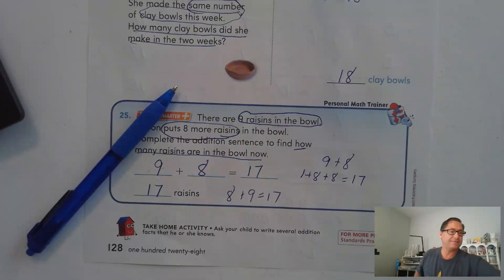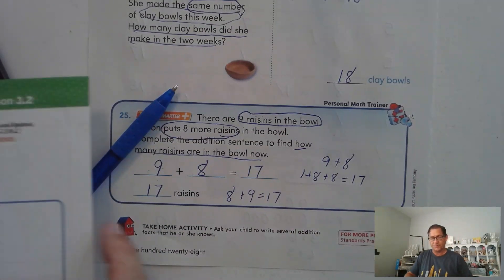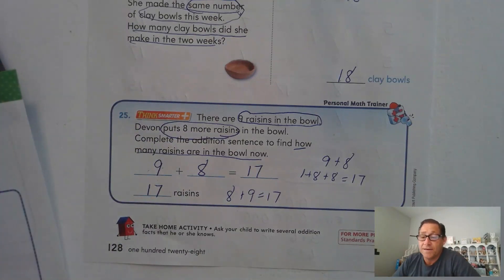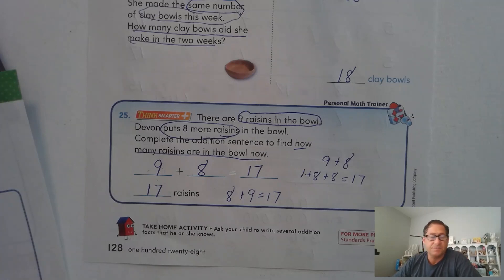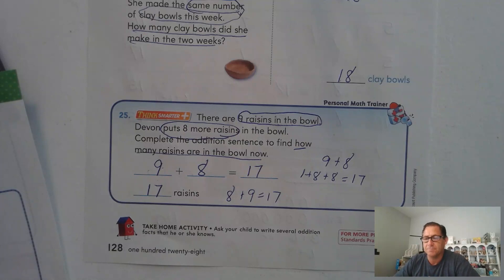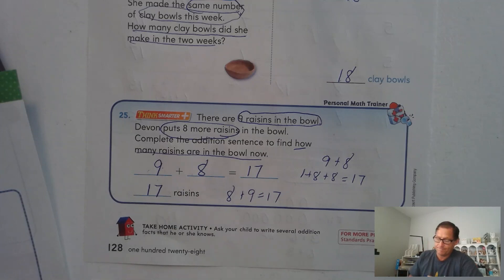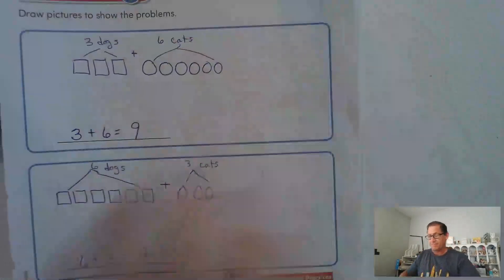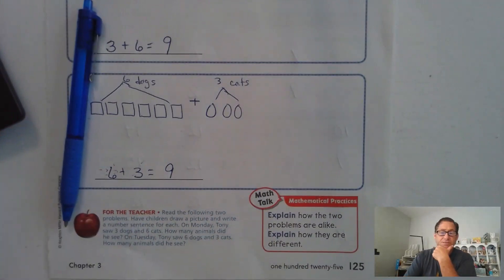That's it for lesson 3.2, practicing addition facts. Make sure you set aside time to practice all of your addition facts — you need to be able to just recall them. If somebody asks you what seven plus eight is, you should say fifteen. If someone asks what nine plus six is, you should say fifteen. Practice them, and until our next lesson, I will see you soon.